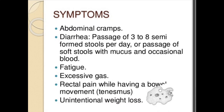Symptoms: Abdominal cramps, diarrhea, passage of 3–8 semi-formed stools per day, passage of soft stools with mucus and occasional blood, fatigue, excessive gas, rectal pain while having a bowel movement, and unintentional weight loss — defined as loss of 4.5 kg or 5% of your normal body weight over 6 to 12 months or less without knowing the reason.